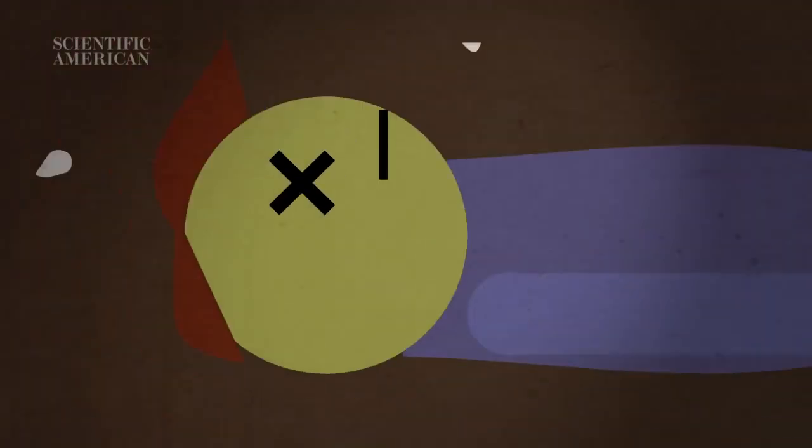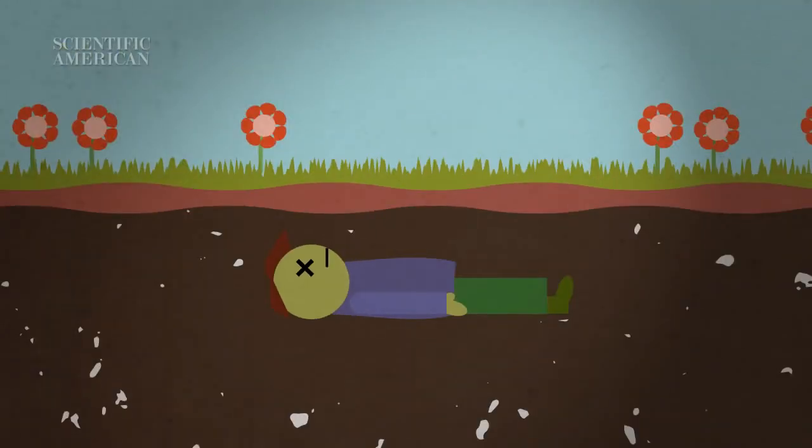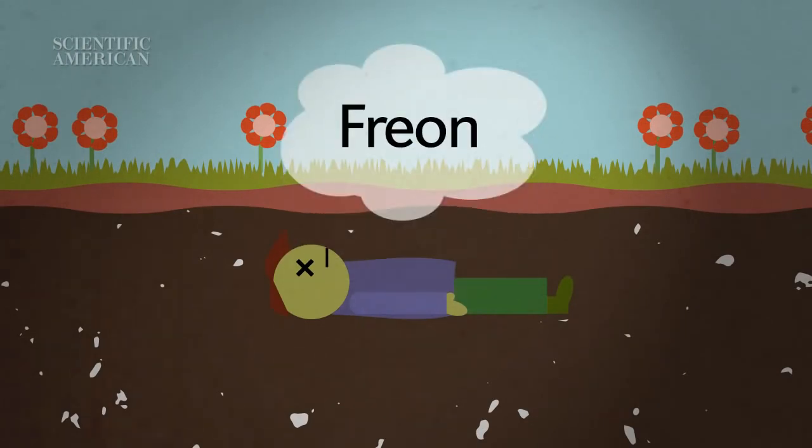The microbes that attack the tissue produce a bewildering array of more than 400 chemicals and gases. They include Freon, that's right, the coolant found in refrigerators.